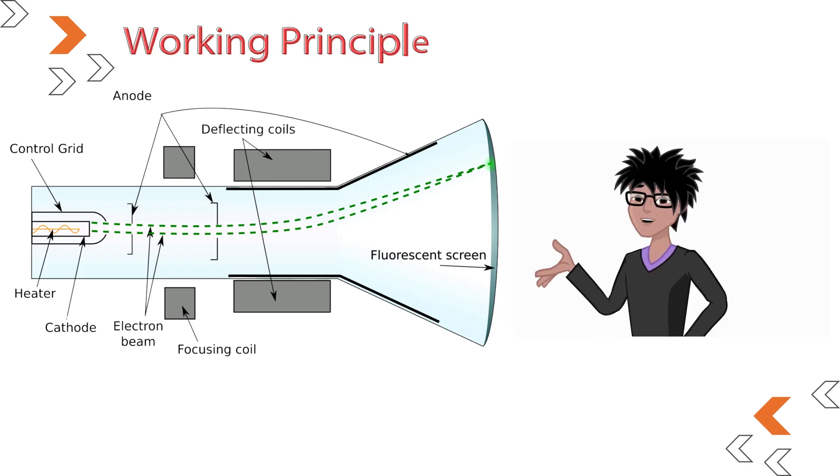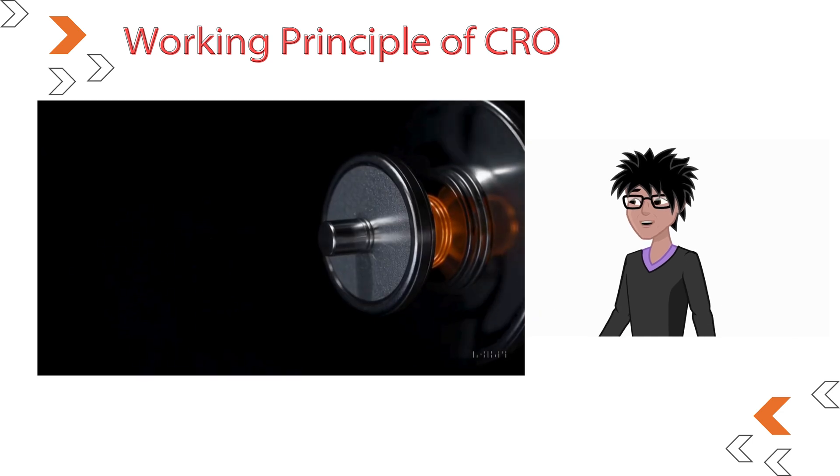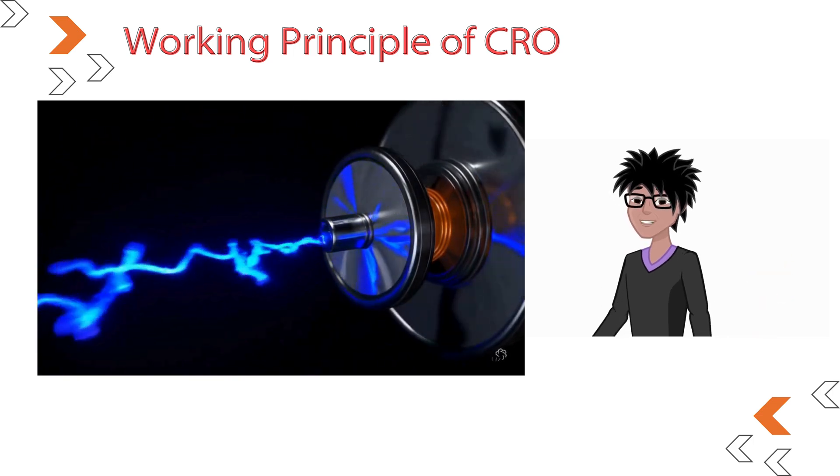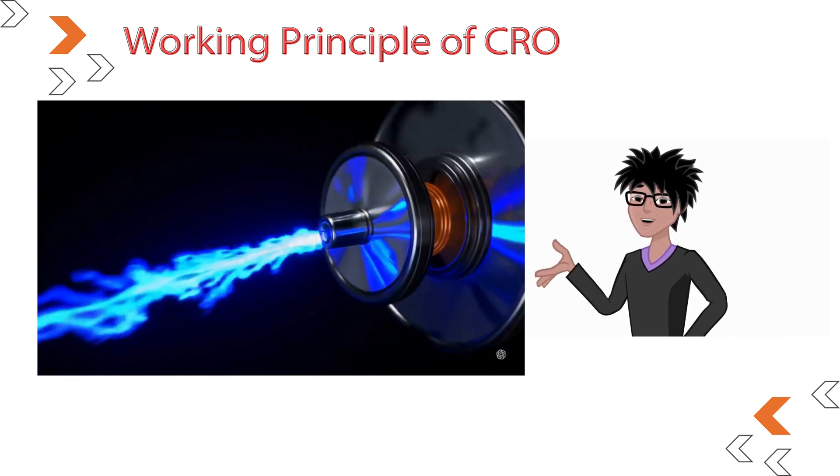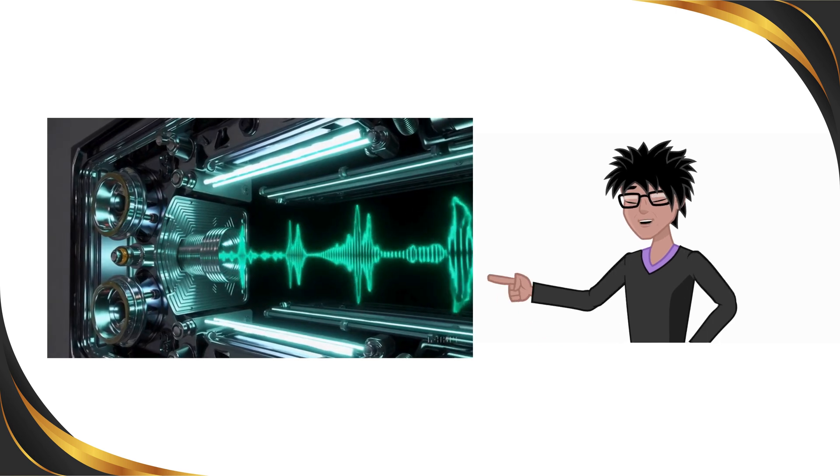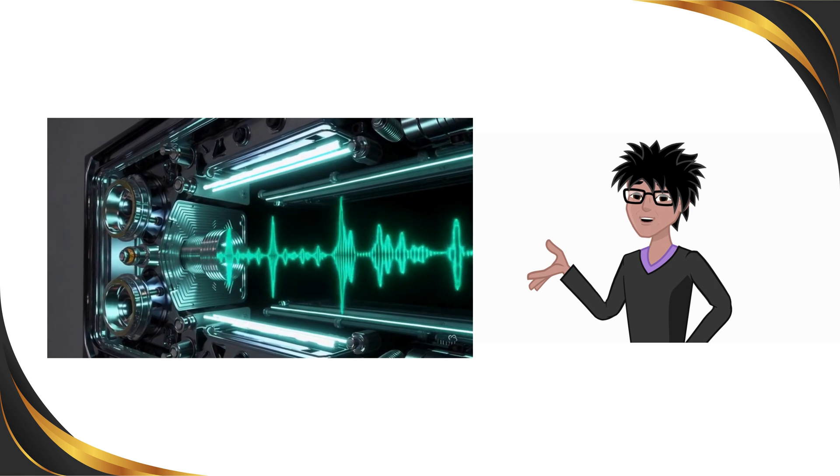Now let's understand how a cathode ray oscilloscope actually works. At the core of a CRO is the cathode ray tube, CRT. It starts with an electron gun that emits a beam of electrons. This beam travels through a vacuum and is directed towards the screen. Two sets of electrostatic deflection plates, vertical and horizontal, control the movement of this beam.